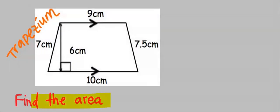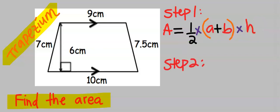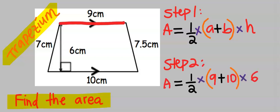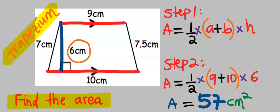Next, we are going to find the area of this trapezium. Step one: write out the formula. Step two: substitute. We add the two parallel sides, which are 9 and 10, and multiply by the height, which is 6. Our answer is 57 cm squared.